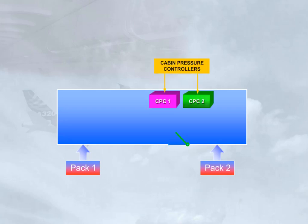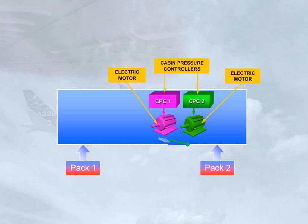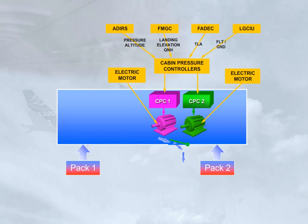Automatic control of the outflow valve is provided by two cabin pressure controllers. Each controller has an electric motor to move the outflow valve. The CPC receives data from the Air Data Inertial and Reference System, the Flight Management and Guidance Computer, the Full Authority Digital Engine Control, and the Landing Gear Control and Interface Unit, in order to elaborate the different pressurization schedules.